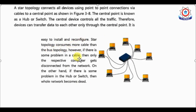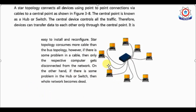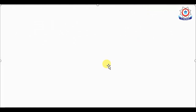Star topology consumes more cable than bus topology, which is a disadvantage. However, if there is a problem with a cable to one computer, only that respective computer gets disconnected from the network. On the other hand, if there is a problem in the hub or switch, the whole network becomes dead.